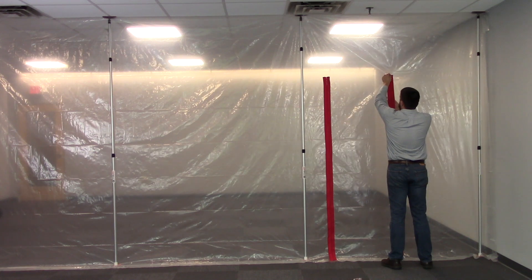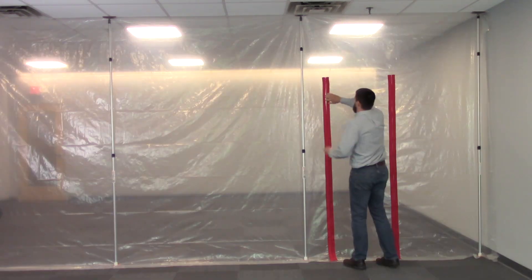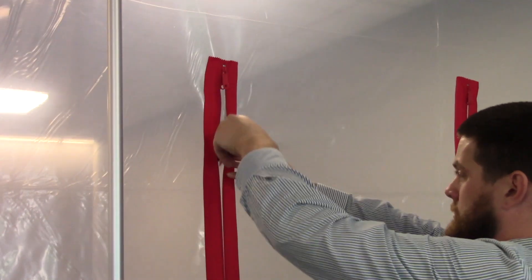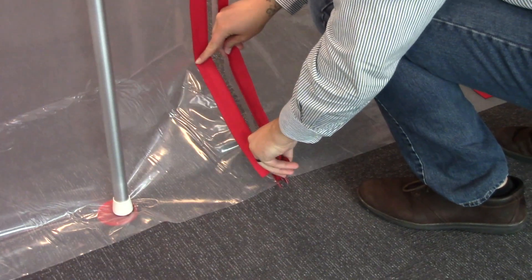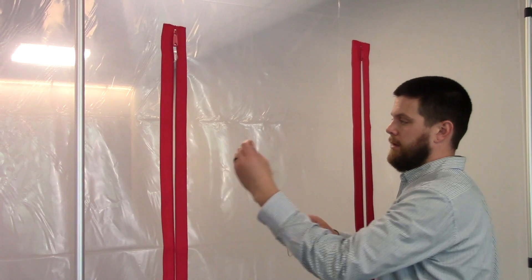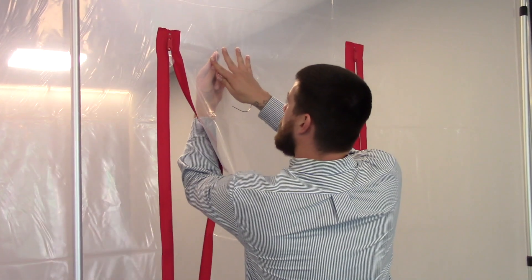Install the second zipper roughly doorway width apart. Using our specially designed zipper knife, cut the plastic sheeting and remove the ribbons. Install the flap hooks by poking the sharp tips through the plastic sheeting.